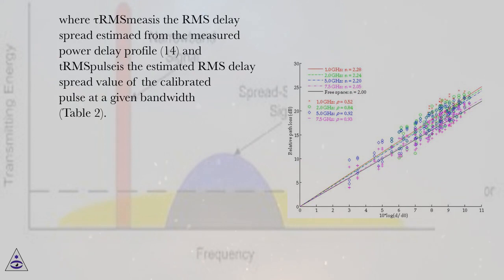Where tau RMS measured is the RMS delay spread estimate from the measured power delay profile, and tau pulse is the estimated RMS delay spread value of the calibrated pulse at a given bandwidth, Table 2.